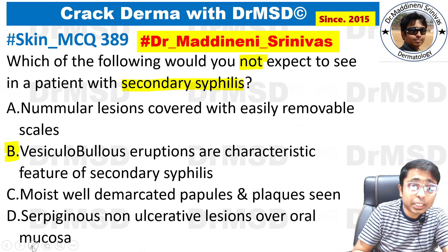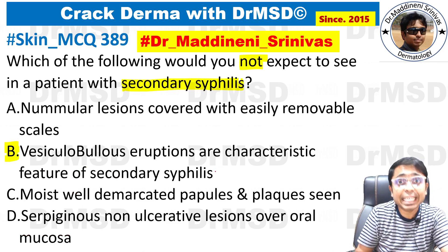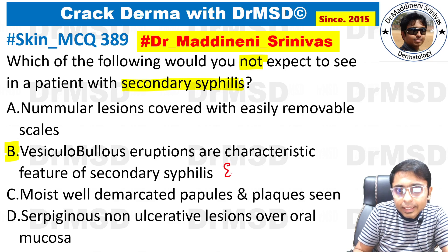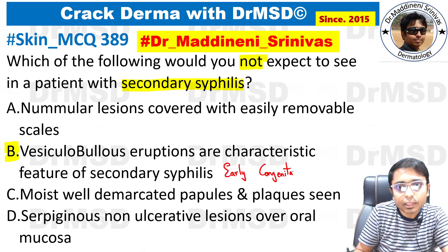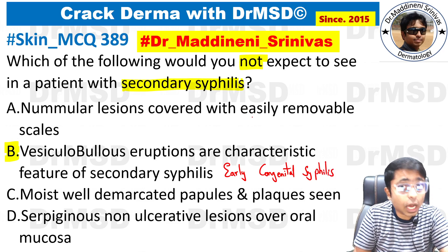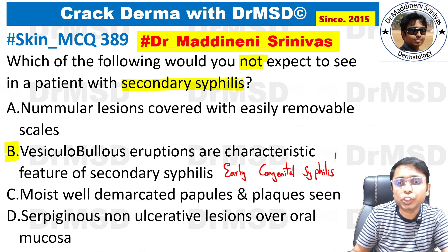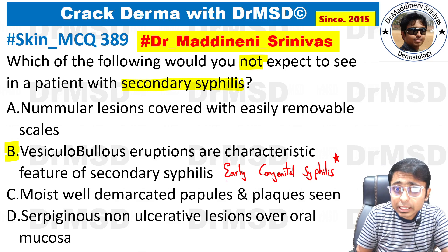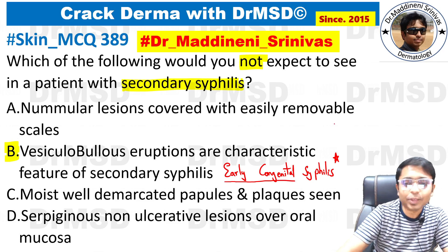Vesiculobullous eruptions are characteristic features seen in early congenital syphilis — not in secondary syphilis. This is a very important point: vesiculobullous (fluid-filled) lesions in syphilis are associated only with early congenital syphilis.